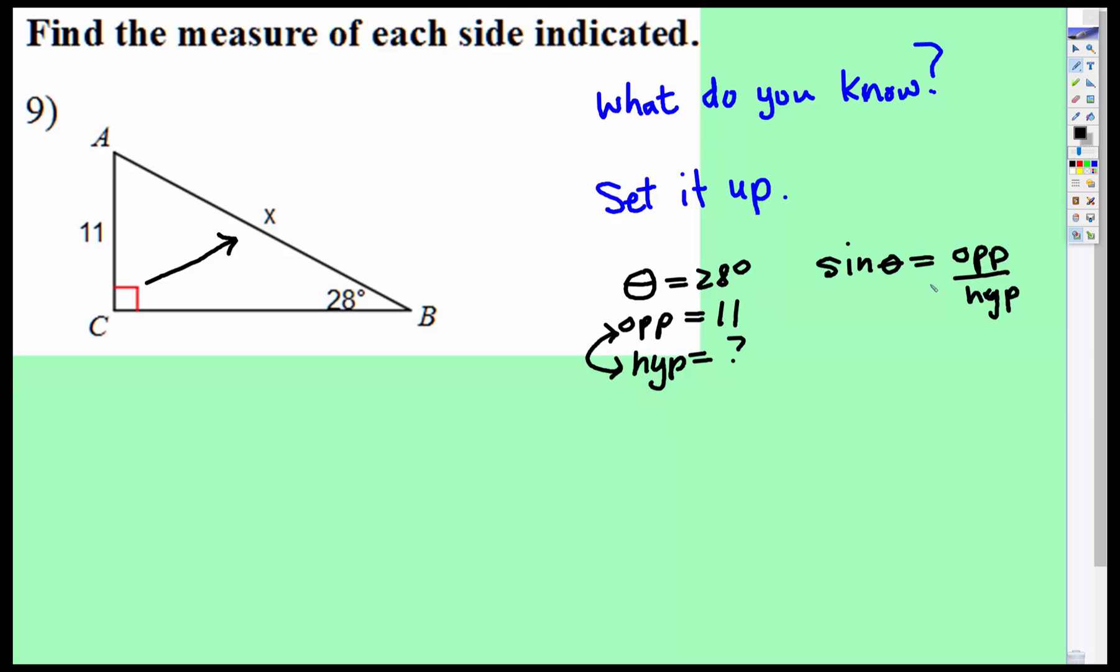So let's go ahead and set up what we know. We're going to use sine of theta equals opposite over hypotenuse. The theta is 28 degrees. The opposite is 11 over x. So this is the opposite, this is the hypotenuse.